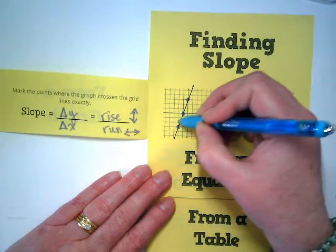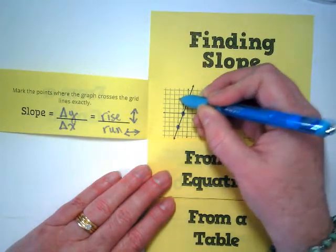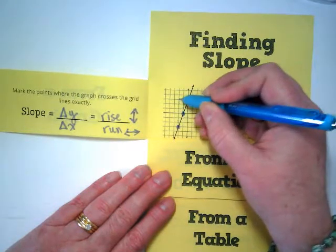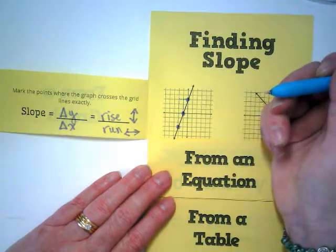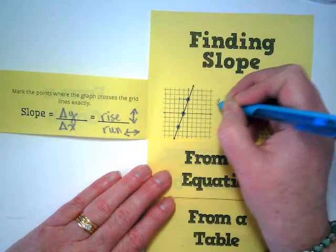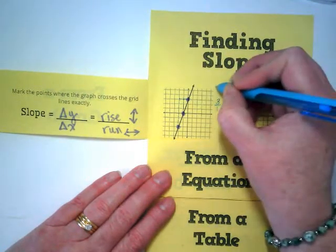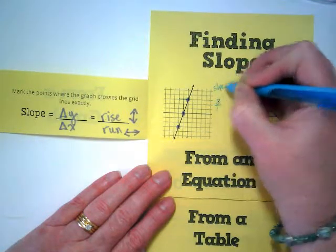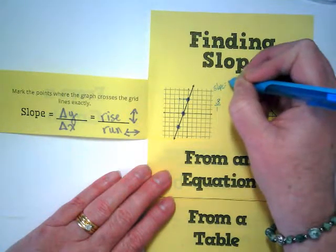There's also a giant one. If I go from here all the way up to this one, it goes up six and it goes over two. Both of those reduce to three over one. So our slope in this case is equal to three.